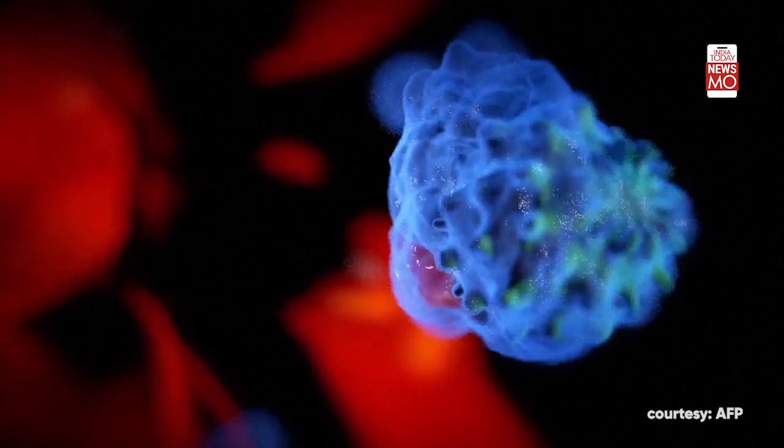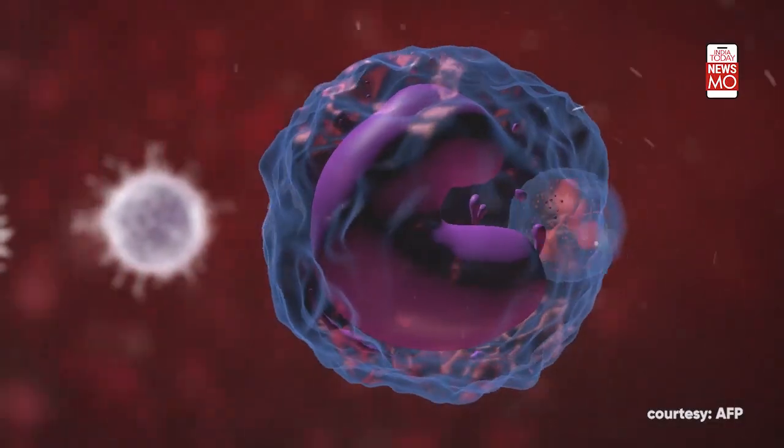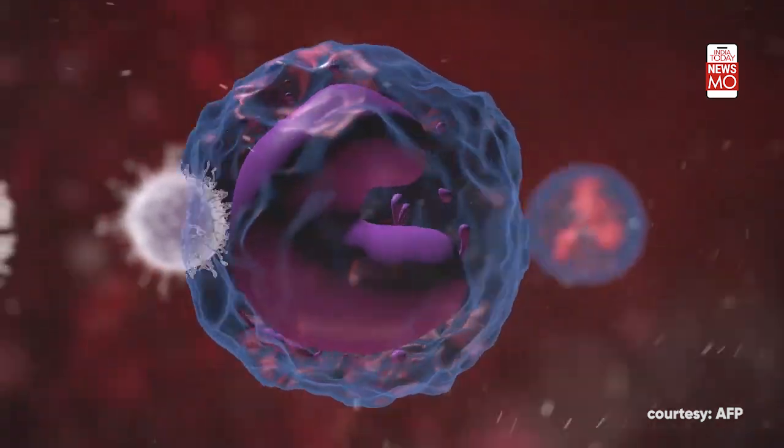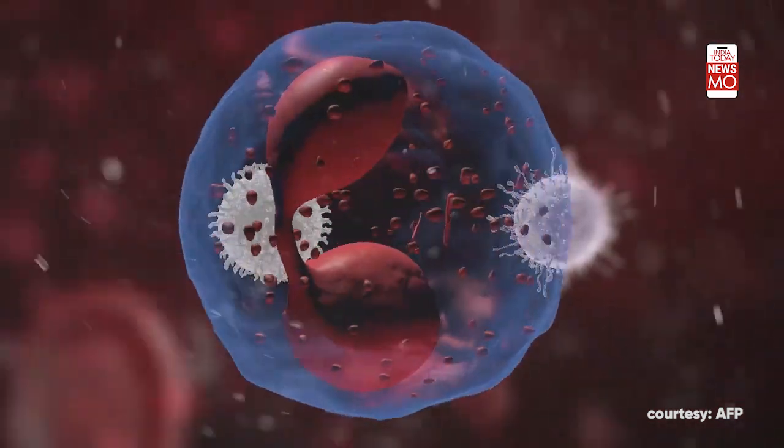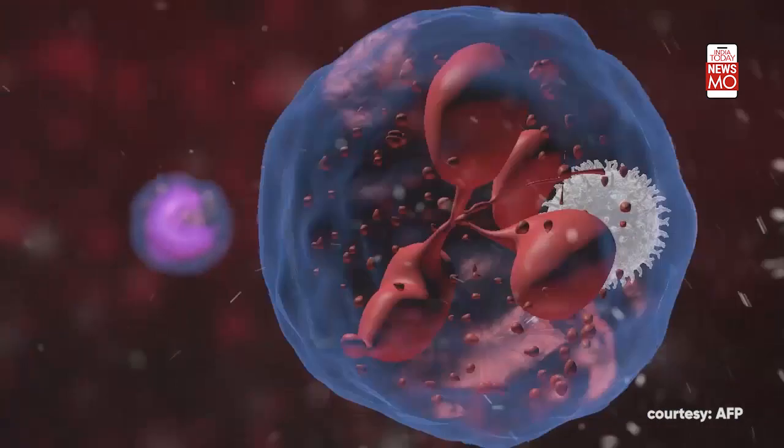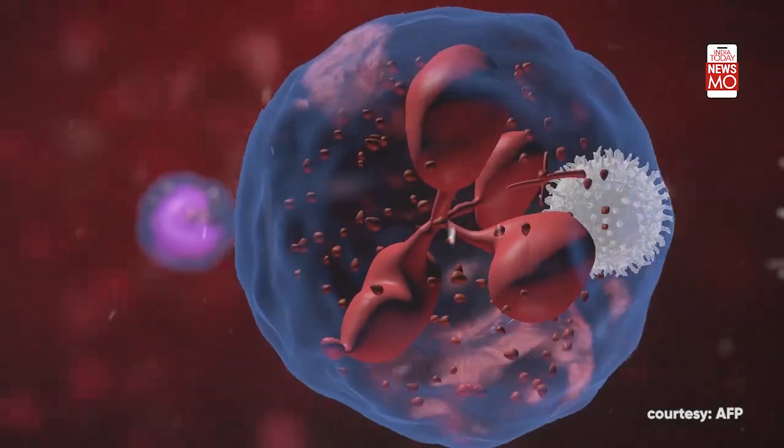White blood cells, also known as leukocytes, identify and eliminate pathogens. Basophils sound the alarm when an invader appears. Eosinophils attack and kill parasites.